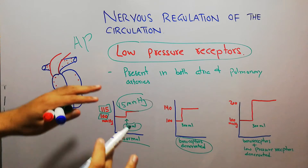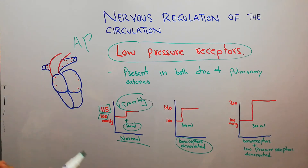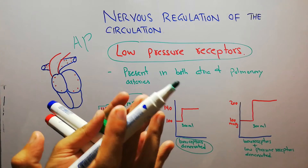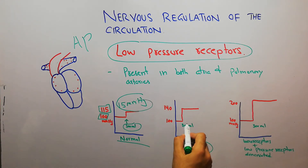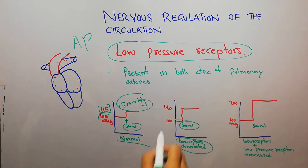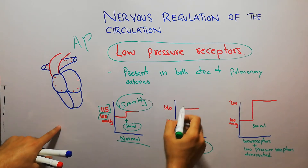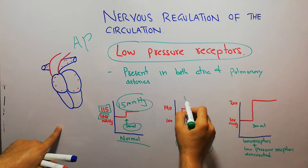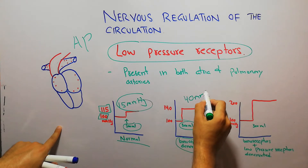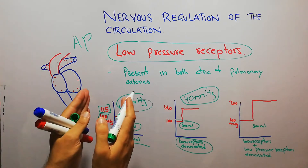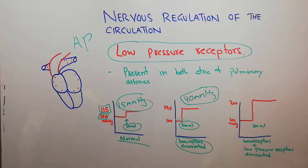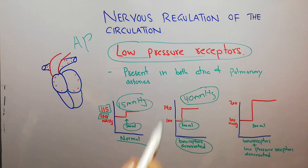Now in the same dog, the baroreceptors are being denervated. A dog is a mammal, and experiments done on mammals are basically extrapolated to human beings. With baroreceptors denervated, the same amount of 300 ml fluid is injected, and the pressure rise is about 40 mmHg — a rise from 100 to 140 mmHg — as compared to just 15 mmHg in a normal dog with normal baroreceptors and normal low pressure receptors.